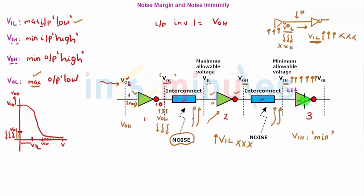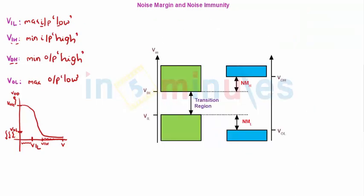So this is the concept of minimum and maximum and what we can allow. Now let's go ahead and see this with a graph or with the markings of VIL, VOL, VIH and VOH.